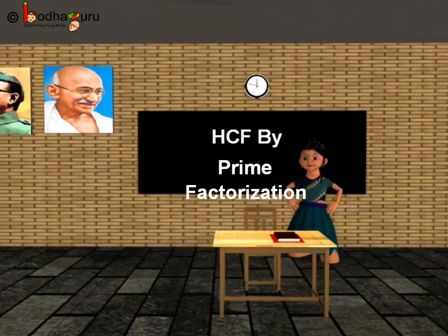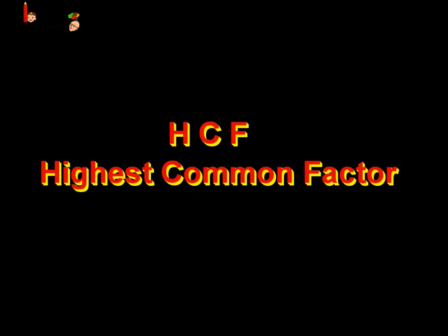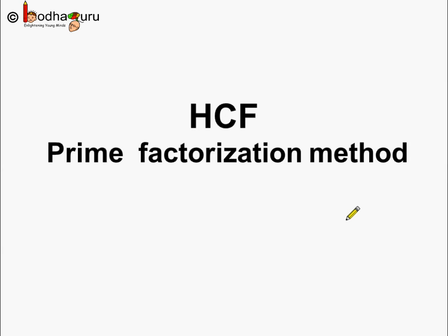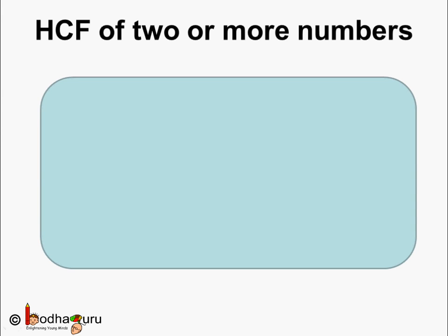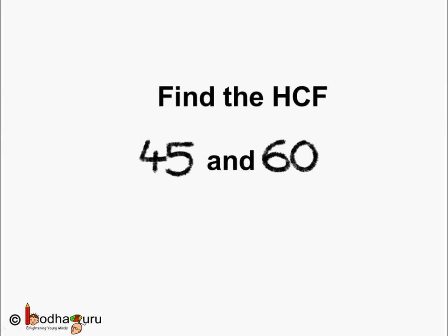Good morning, children. Now you know what is HCF — that is Highest Common Factor. Now let us try to find out the HCF by using the prime factorization method. First, let us revise: the HCF of two or more numbers is the biggest number that can exactly divide all the given numbers without any remainder.